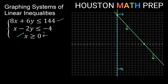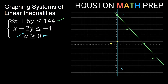For x minus 2y less than or equal to negative 4, finding the x-intercept: zero out y, giving x equal to negative 4. Plot negative 4 on the x-axis. For the y-intercept, zero out x: negative 2y equal to negative 4. Dividing both sides by negative 2 gives a positive 2. So the y-intercept is 2. We can graph the line through those points.